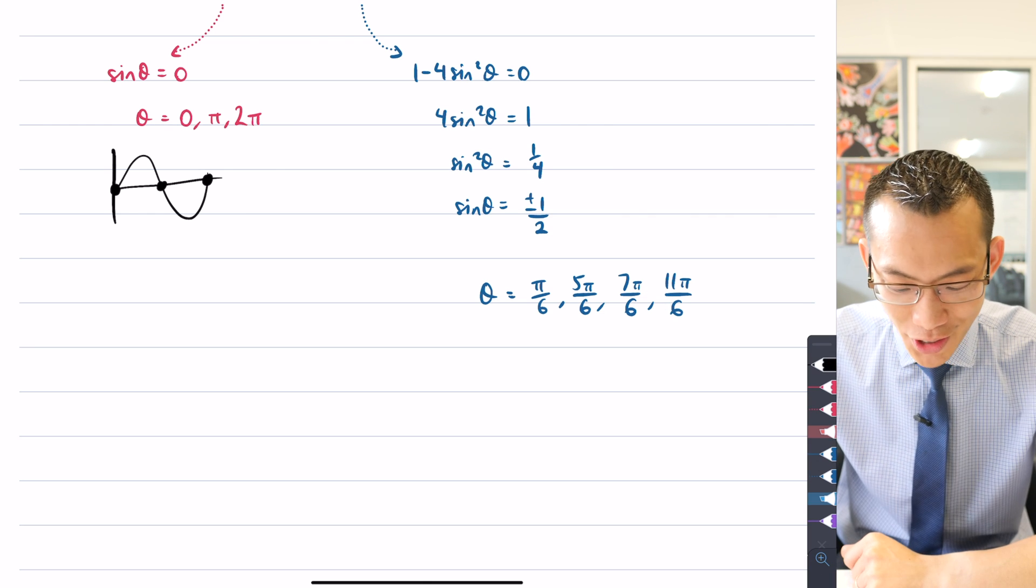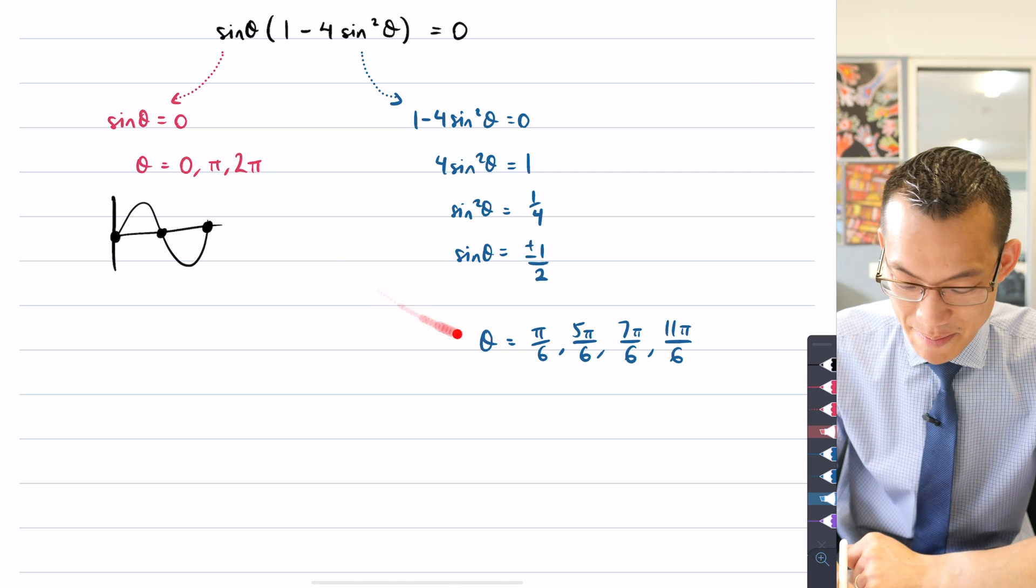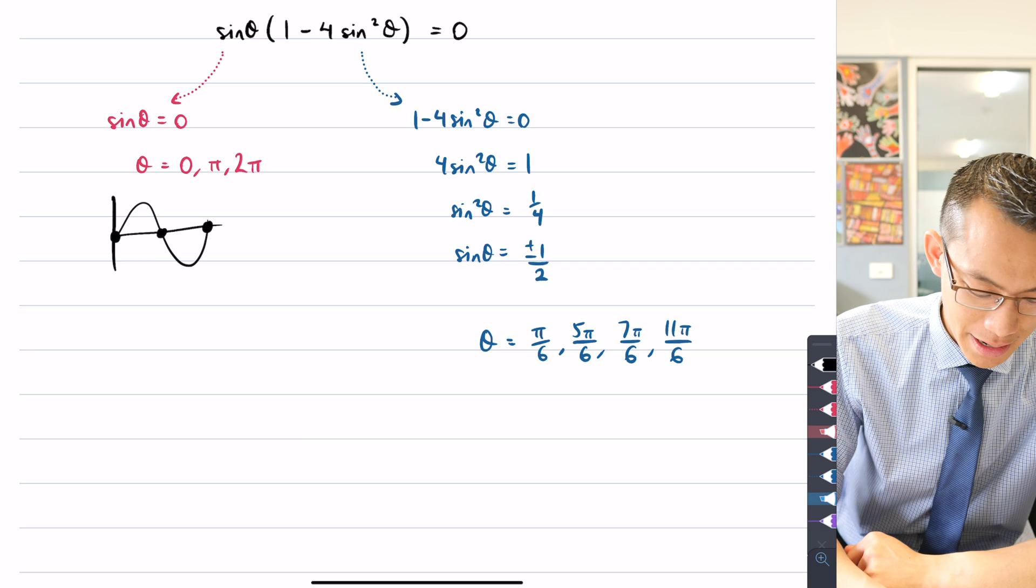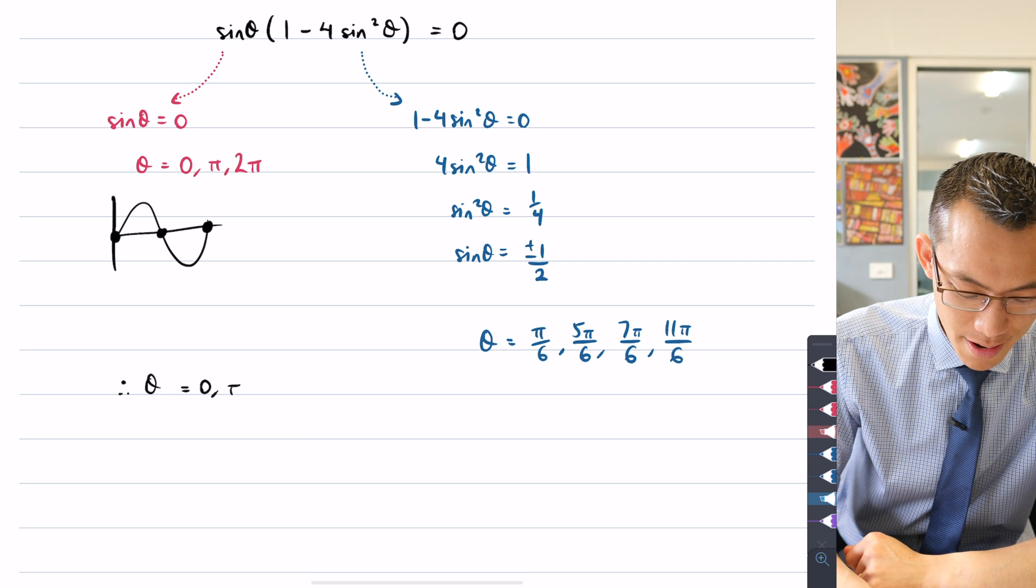So I've got, count them off, not 1, not 2, not 3, but in fact together, 7 answers. So I should conclude by saying, therefore, theta equals 0, π, 2π,